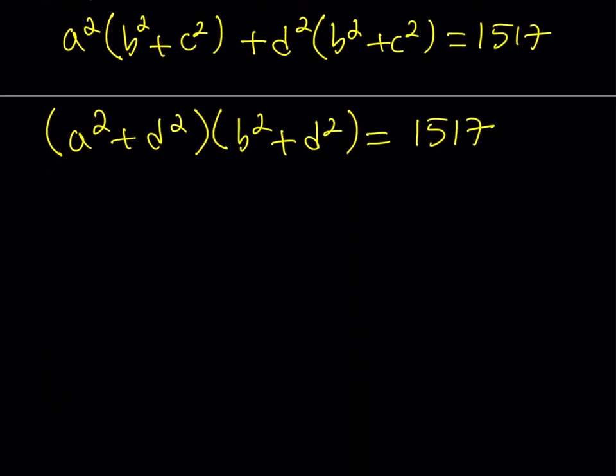If you consider the first and the third, you can take out an A squared, and that's going to give you B squared plus C squared. And then, these two terms have a common factor of D squared, and you get the same one, B squared plus C squared. Cool. What is so cool about factoring is that it's easier to solve if you're looking for integer solutions and the expression is factored. Okay? So, this turns into A squared plus D squared multiplied by the quantity B squared plus C squared is equal to 1,517.